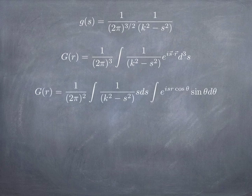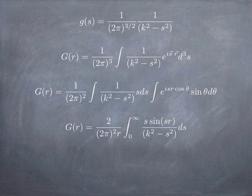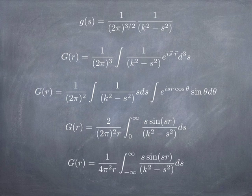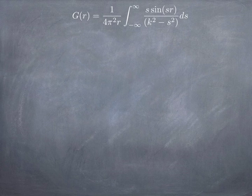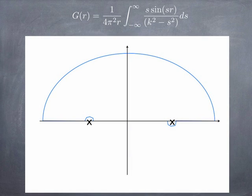It's a three-dimensional integral. We break it into s, θ, and φ. The φ part has no dependence so you just multiply by 2π. The θ integral isn't too bad using a u-substitution. You end up with an integrand that looks like s·sin(sr) / (k² − s²). Note that k² − s² factors as (k+s)(k−s), and since s times sine is even, you can extend the integral over all s from −∞ to +∞ and divide by 2. This integral has poles at s = +k and s = −k on the real axis.